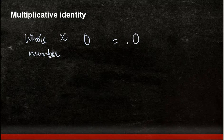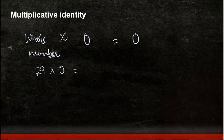Similarly if you notice that whenever you multiply any whole number by 0 what do you get? The answer is always 0. So let's say for example if I multiply 29 times 0, 29 being the whole number, the answer is 0.